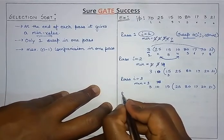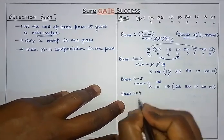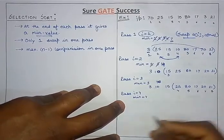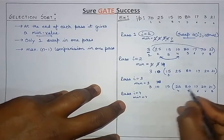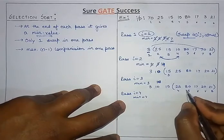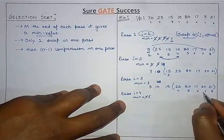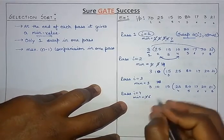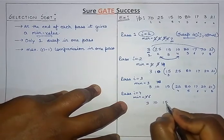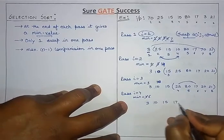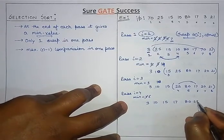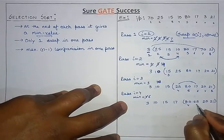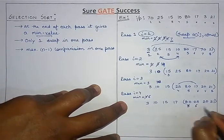Now we apply the fourth pass, incrementing i to 4. The minimum search also starts from position 4 since the first three are already sorted. Checking: 25 is minimum at 4th, 5th is not minimum, 6th has 17 which is less than 25, so position 6 becomes the minimum. Moving further, no value is less than 17, so we replace the 4th value with the 6th value. The array becomes: 3, 10, 15, 17, 80, 25, 20, 21.